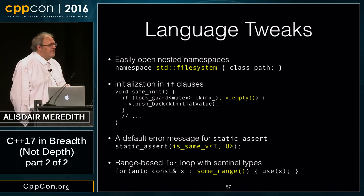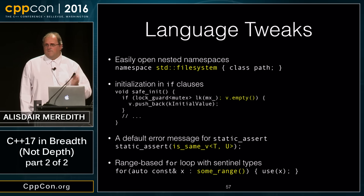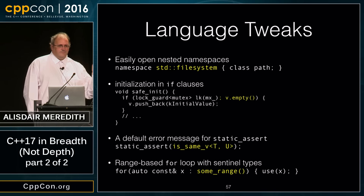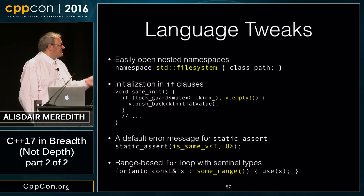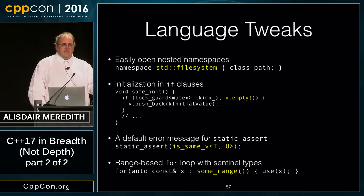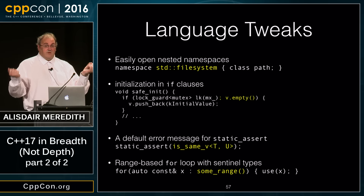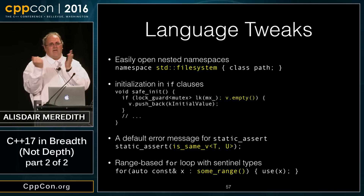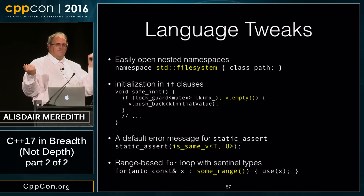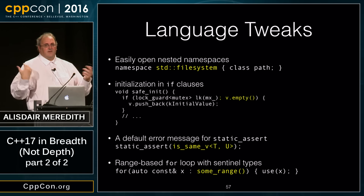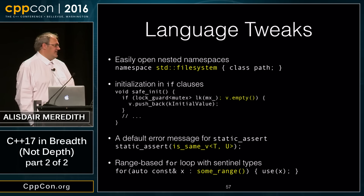An obscure corner that's significant if you've been following the Ranges TS: a range no longer needs the begin and end iterator to be the same type. You can have a sentinel type at the end that tests against the first iterator type — a simpler sentinel that is very useful for some kinds of ranges, especially input ranges.